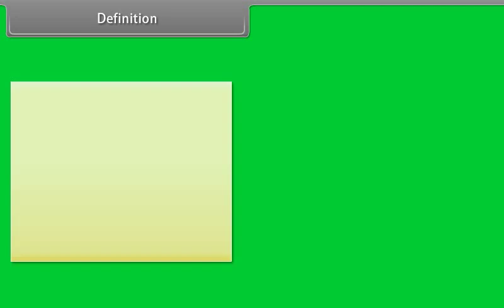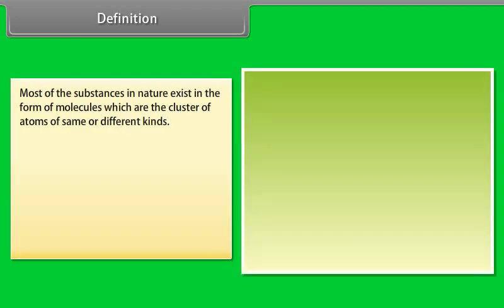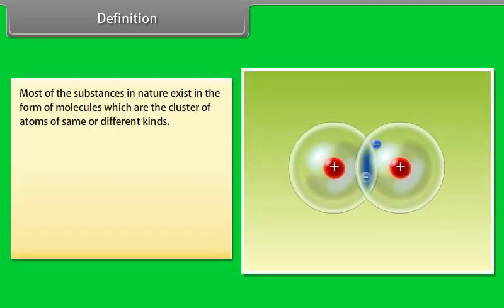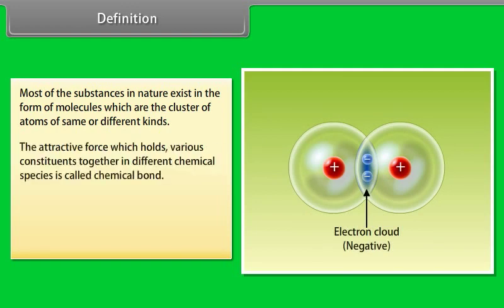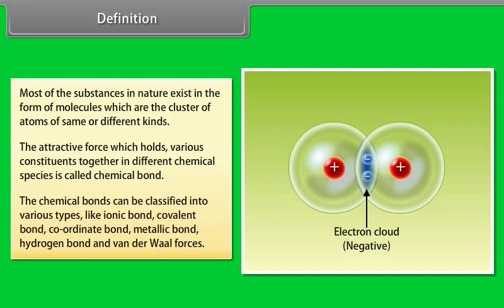Most of the substances in nature exist in the form of molecules, which are clusters of atoms of the same or different kinds. The attractive force which holds various constituents together in different chemical species is called a chemical bond.